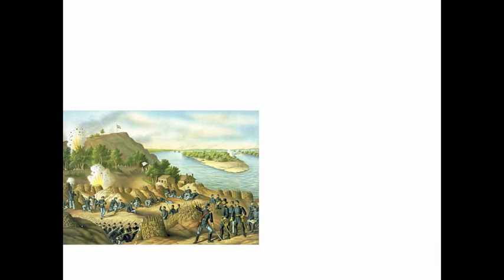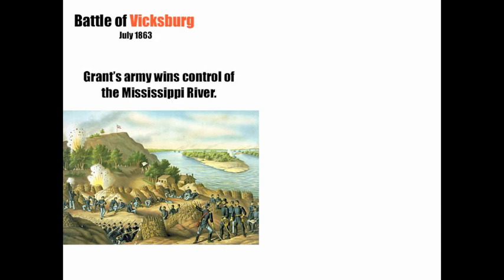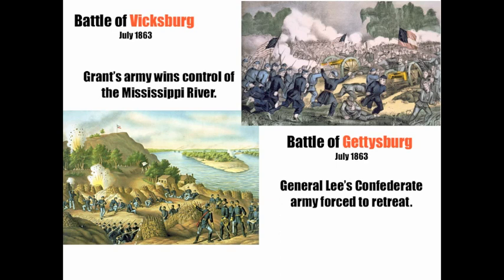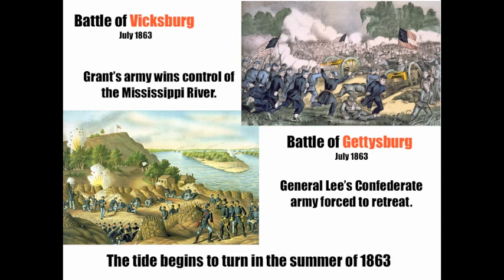Let's look at a couple of key battles that turned the tide. The Battle of Vicksburg in July of 1863 saw Ulysses S. Grant's army win control of the mighty Mississippi, controlling trade in the west. The Battle of Gettysburg in July of 1863 forced General Lee's Confederate army to retreat after their mistaken invasion of the North. The tide began to turn in the summer of 1863, and this long hard battle between the states was coming to an end.